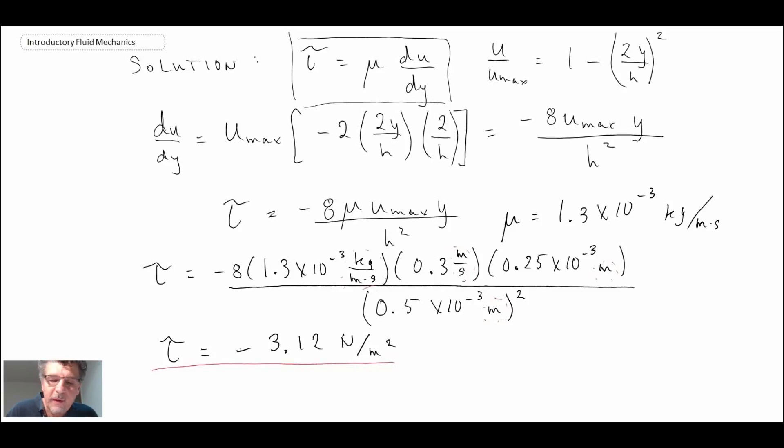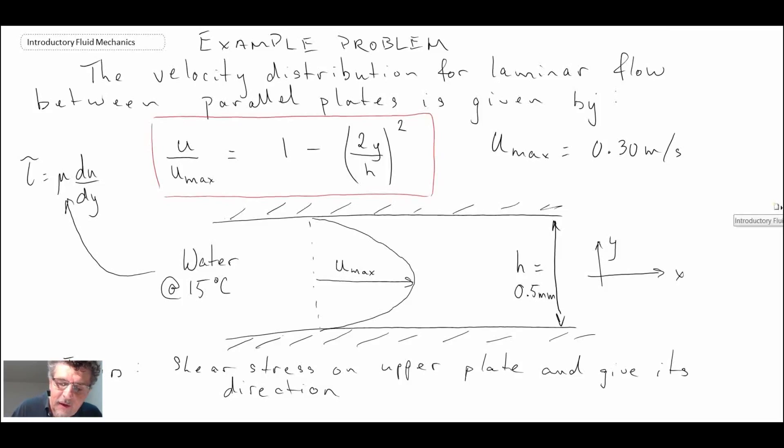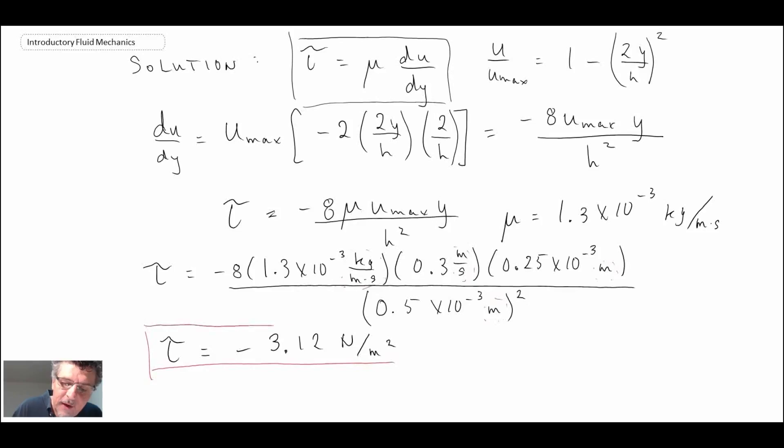If you recall the question, they were asking for the shear stress on the upper plate and give its direction. When we went through this analysis and determined this as being the shear stress, is that shear stress on the upper plate or is that shear stress in the fluid? If you go back to the derivation when we came up with tau equals mu du by dy, we were considering a little chunk of fluid as it was deforming. So that is really the shear stress in the fluid, not on the solid.